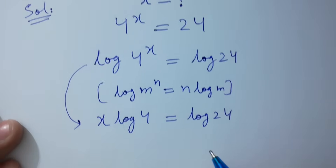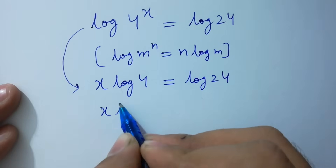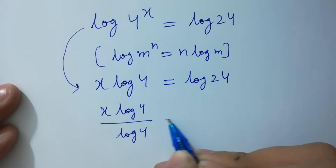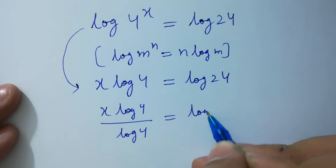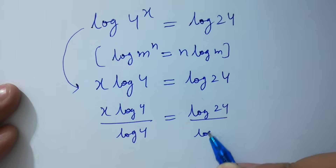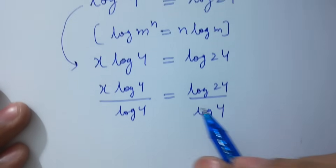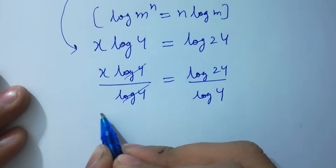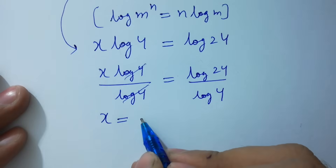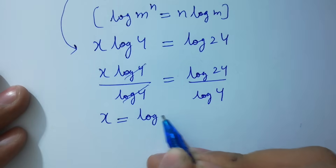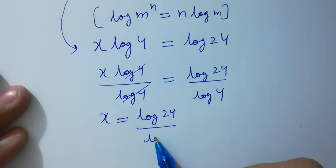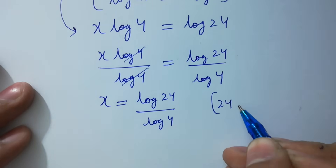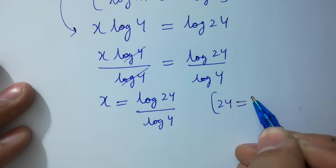Divide both sides by log 4 to simplify. Log 4 and log 4 will be cancelled. We have x equal to log 24 over log 4.